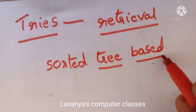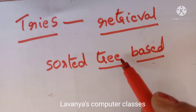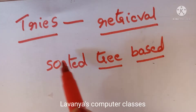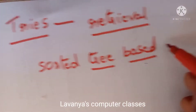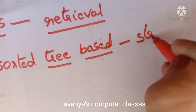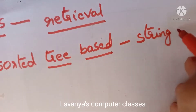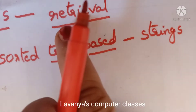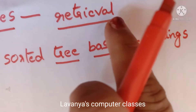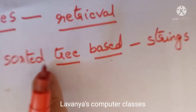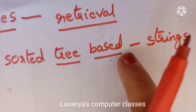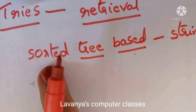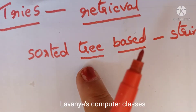Trie looks like a tree-based data structure, but all elements are stored in sorted manner. It is specially used for storing strings. Trie is a sorted data structure that stores a set of strings in ascending to descending order.